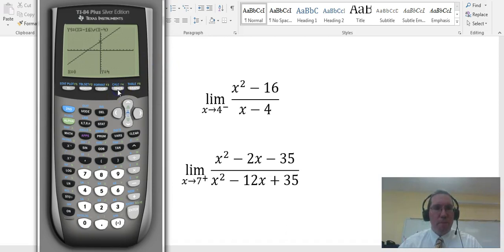So if I hit trace, and now I can type in values. I can enter values, and the calculator will give me the output values of the function. So if I type in 3.9, see that for x, 3.9, and then press enter, it tells me that when x is 3.9, y is 7.9. So my first output is 7.9.